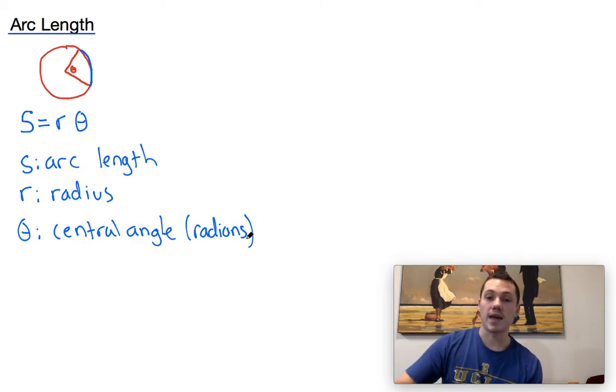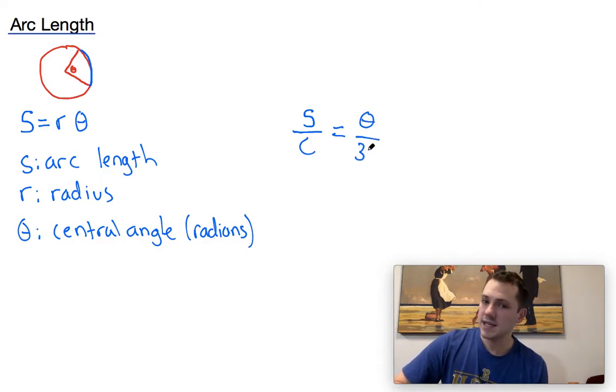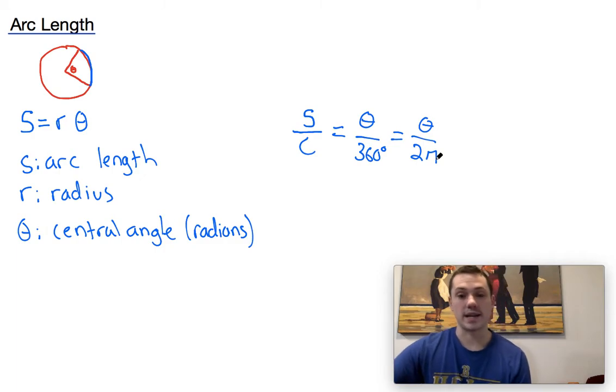Or, alternatively, some of you may have learned it by setting it up as a ratio. And that's fine as well. So I'll just go ahead and write that ratio here. And the ratio is that the arc length divided by the circumference is equal to theta over 360 if you're doing degrees, or it could be theta over 2 pi if you're dealing with radians.